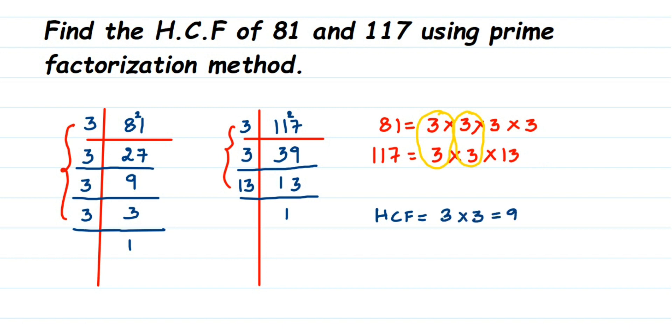So 3 × 3 = 9, meaning the HCF of 81 and 117 is 9. I hope this question is clear. In case you have any question or doubt, you can drop a comment. Thank you so much for watching.